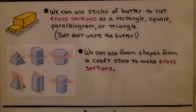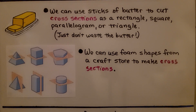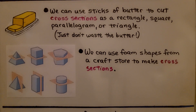We can use sticks of butter to cut cross-sections as a rectangle, square, parallelogram, or triangle — just don't waste the butter. And we can use foam shapes from a craft store to make cross-sections. If you go to a craft store to the floral section, they'll have dry foam bricks and cones that you can use to make cross-sections.